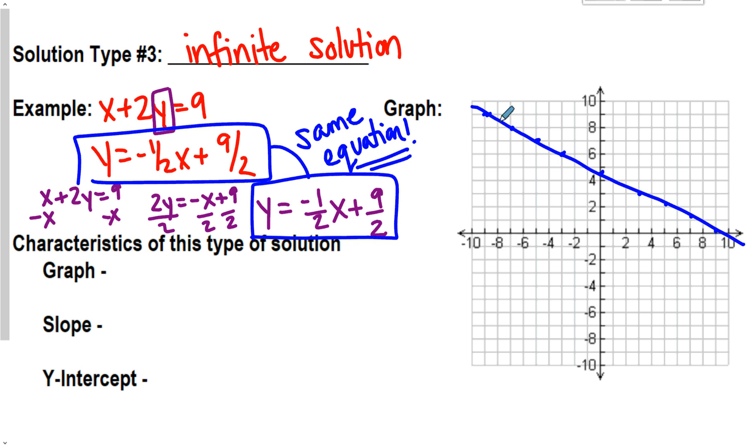And it's called an infinite solution because every single dot on this line will work for both of these guys. So, every single one of these is a solution. There's infinite possibilities of solutions on that line. And that is why we call it an infinite solution.